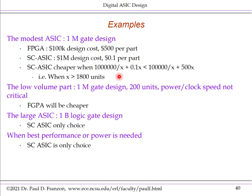Standard cell designs are very cost effective in volume. If you're only making 200 units and power and clock speed aren't critical, the FPGA would be cheaper. If you're building a billion logic gate design, there's no FPGA that will fit it — standard cell ASIC is your only choice. Similarly, if power or performance is very critical — such as cell phone processors or AI accelerators — standard cell ASIC is your only choice.